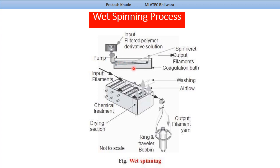In the coagulation bath, the extruded filament comes out and solidification of the filament takes place, along with removal of the solvent by means of a non-solvent or chemical means. The filament coming out of the spinneret is then passed through certain different zones, removed by chemical means, and finally wound onto a bobbin.